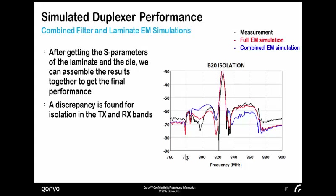The right plot shows the comparison of band 20 isolation. The black is the measurement, the red curve is the full EM simulation results with the filter under the laminate, and the blue curve is the combined EM simulation after we separate the filter and the laminate. From this plot, we can find discrepancies for both isolation in the TX and RX bands.